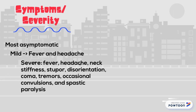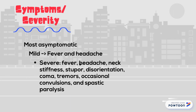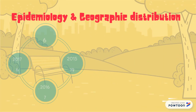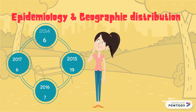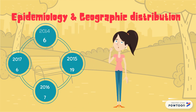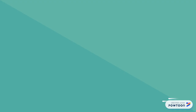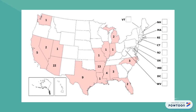Usually, the people affected by this virus are asymptomatic. The mild symptoms are fever and headache, and the most severe. The epidemiology and geographic distribution — we can observe that in Texas from 2008 to 2018.